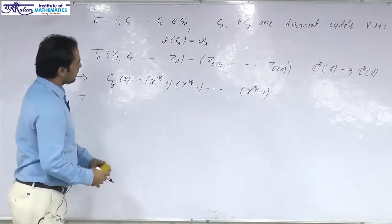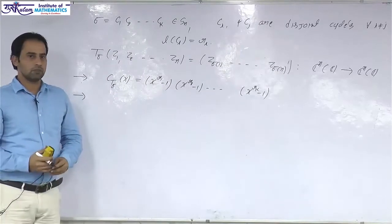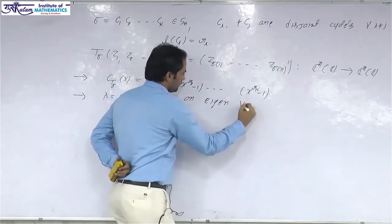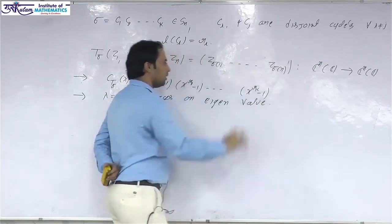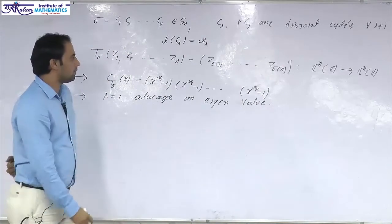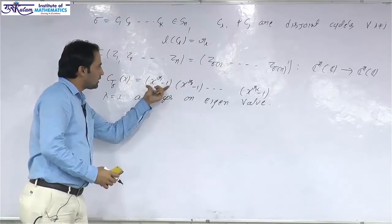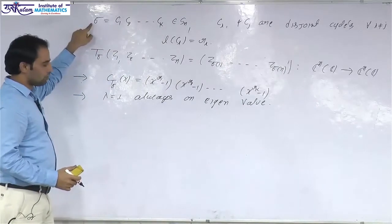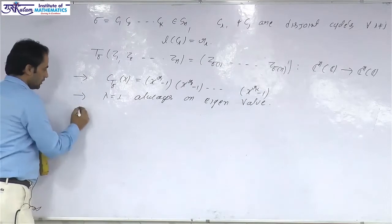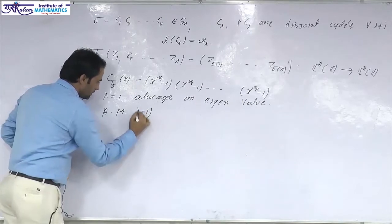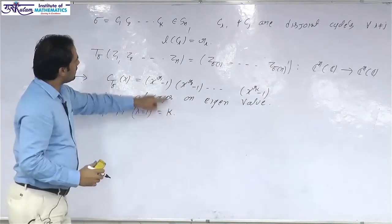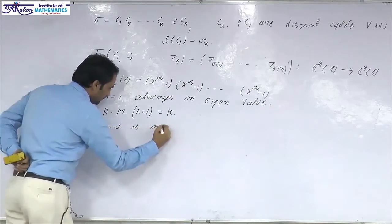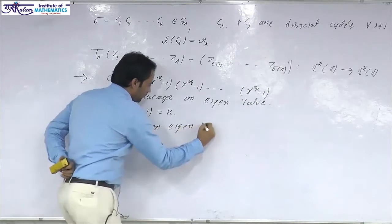You can easily check that λ = 1 is always a root of the characteristic polynomial, so λ = 1 is always an eigenvalue. Further, the algebraic multiplicity of λ = 1 is always k, where k is the number of disjoint cycles in the cycle decomposition of σ, since λ = 1 is a root of each factor.